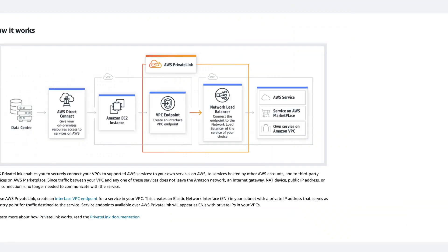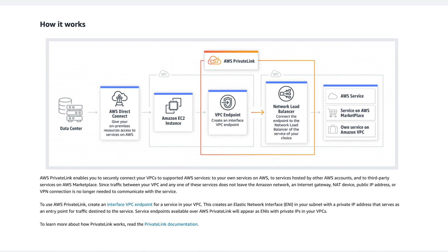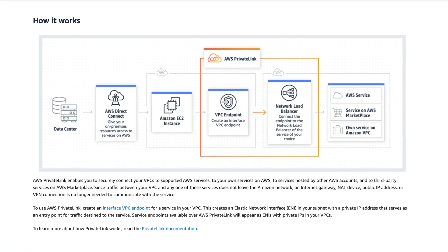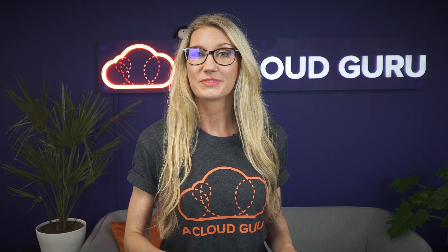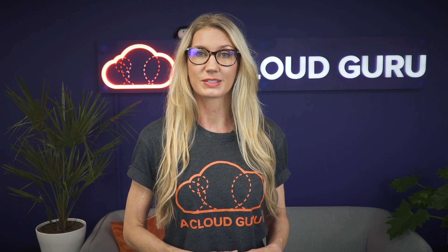Private Link is a network service which provides private connectivity between your VPC and services hosted in either AWS or in your own data center. With Private Link, your network will not be exposed to the public internet and you will not need to use an internet gateway or a public IP address. This is going to enable you to invoke Lambda functions securely without exposing your traffic to the internet, which is great for organizations which have strict controls over their networks and who are not allowed to have their networks exposed to the internet.